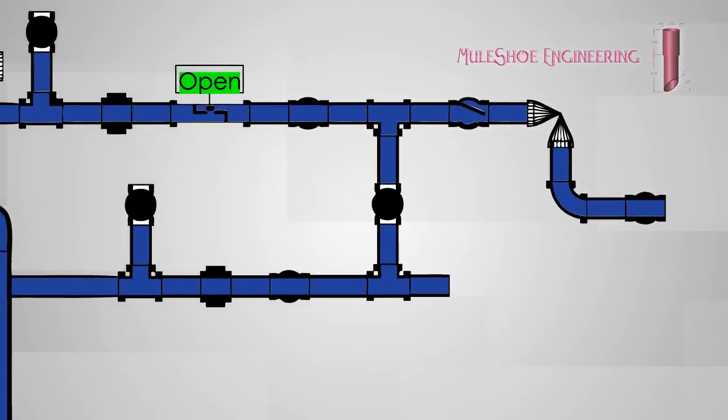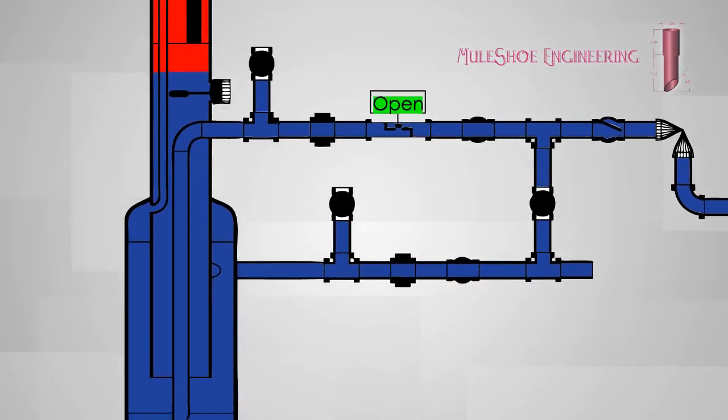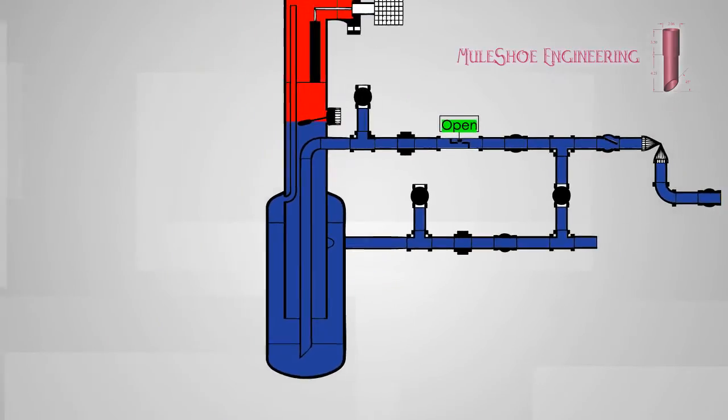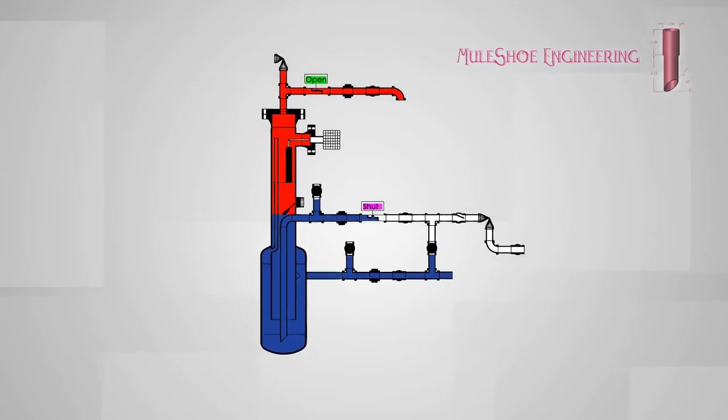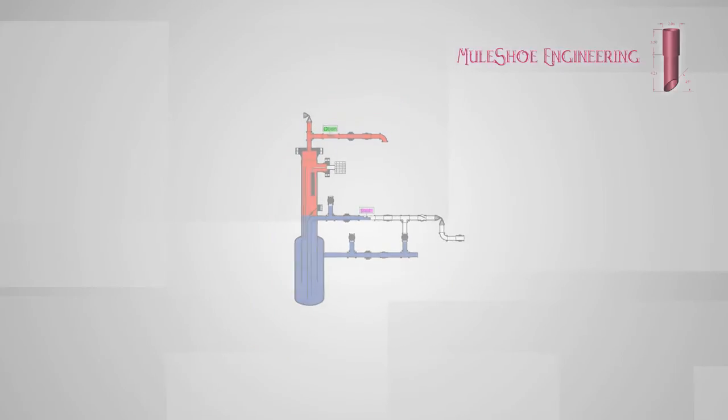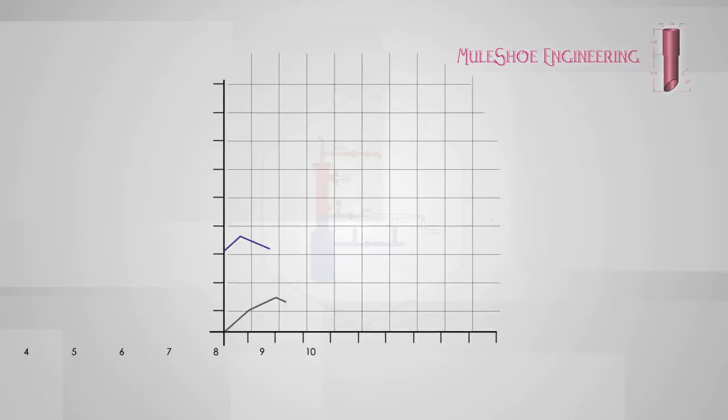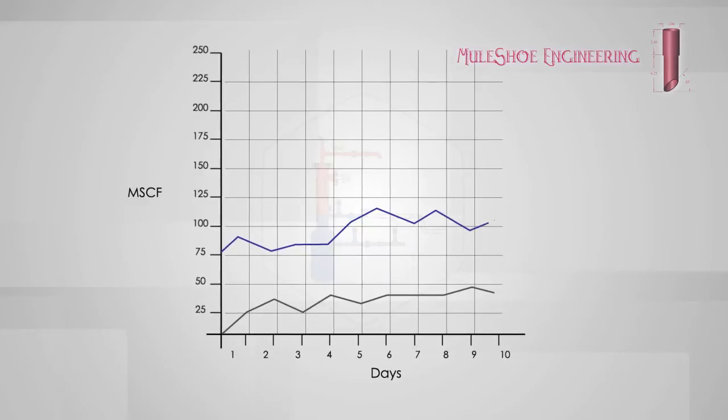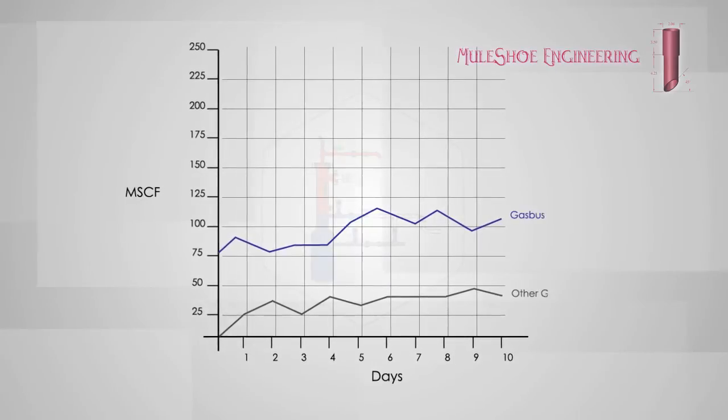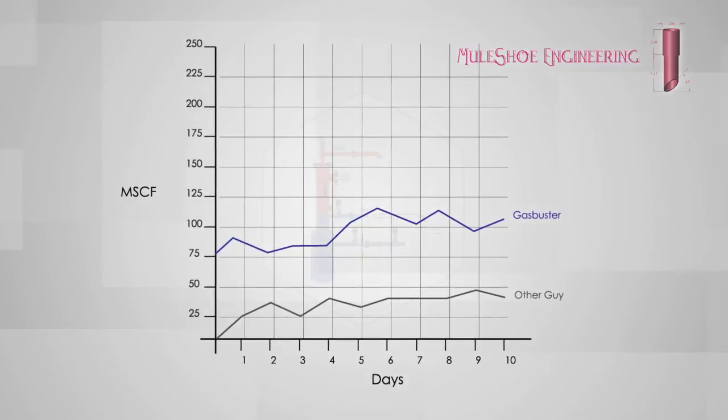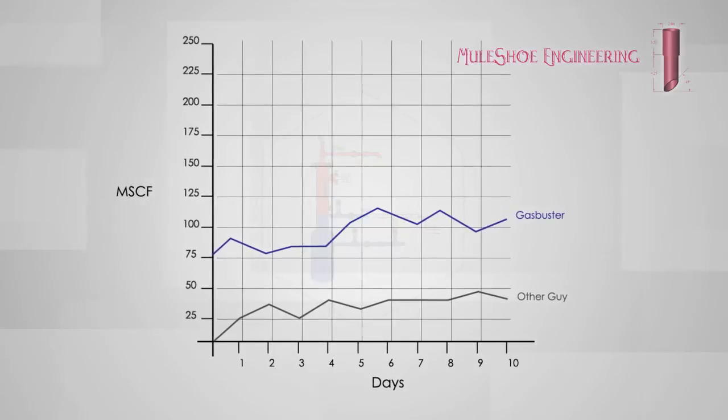A bottom float is also in place to automatically close the water outlet in the event that a large quantity of gas is slugged through the downhole pump. With the Gas Buster, you'll see increases in your sales volumes while outgassing from tanks is reduced.